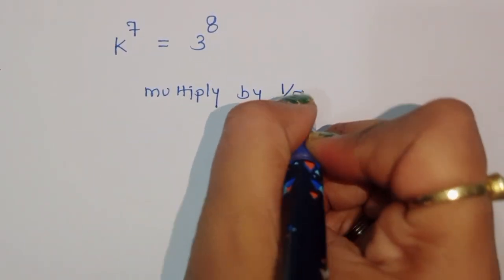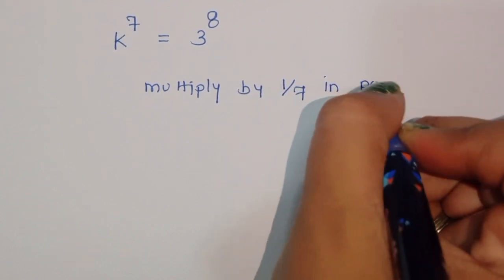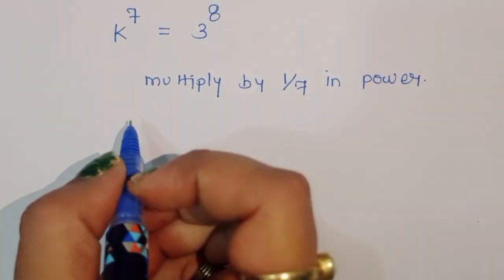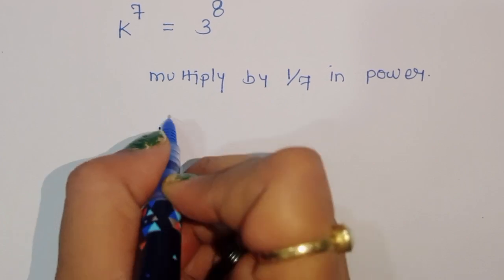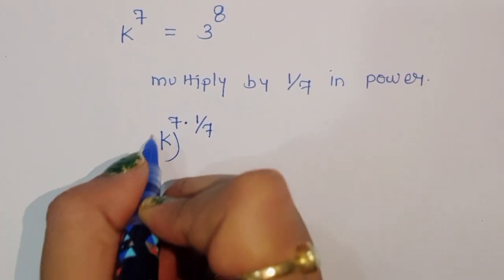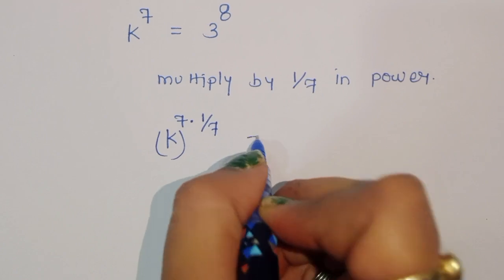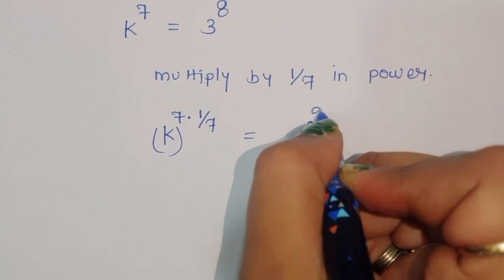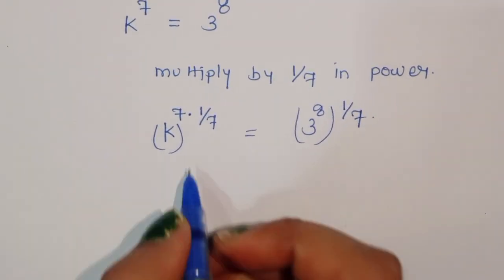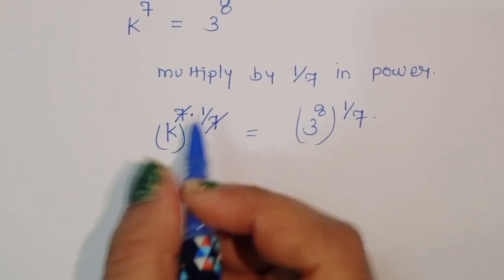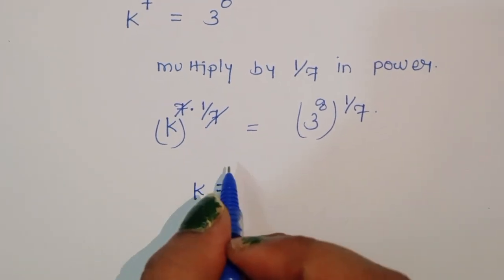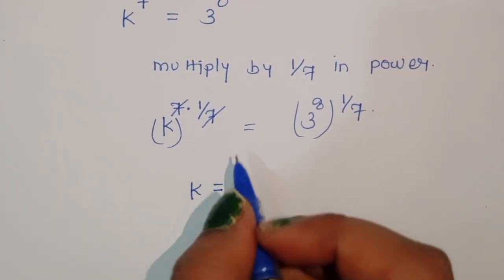Multiplying both sides by 1 over 7 in the power. Then we will get k to the power 7 times 1 over 7 equals 3 to the power 8 times 1 over 7. Now 7 is cancelled here. So k is equal to 3 to the power 8 over 7.